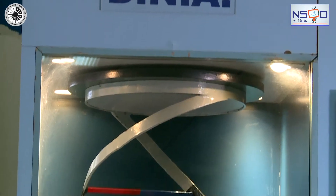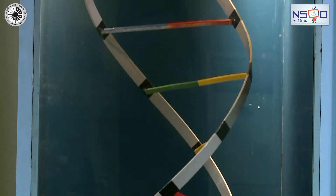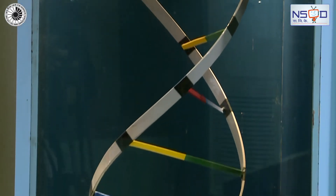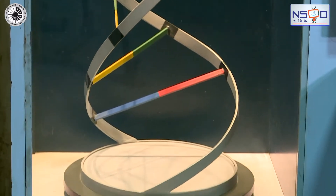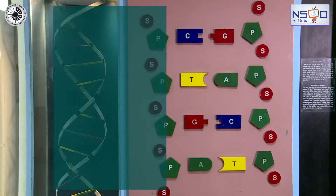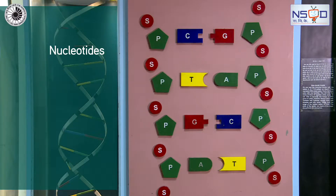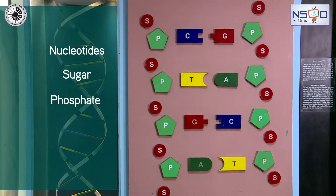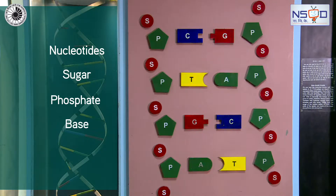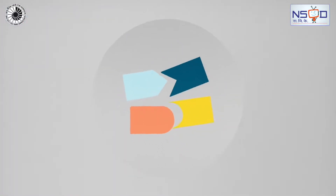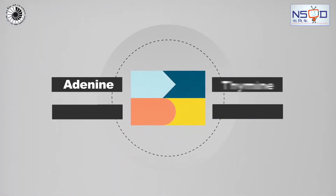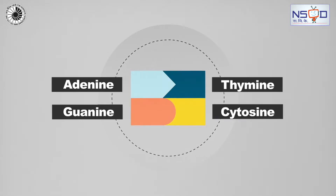DNA has the same composition and structure in all organisms. The basic building blocks of DNA are called nucleotides, each consisting of a sugar, a phosphate, and a base. In DNA, the four bases are adenine, thymine, guanine, and cytosine.